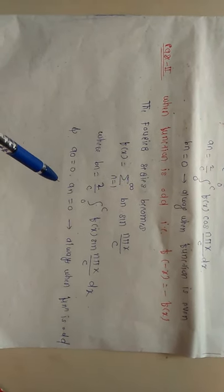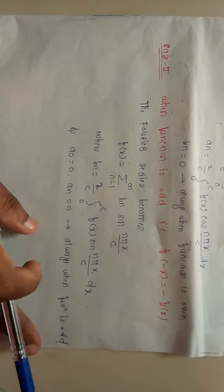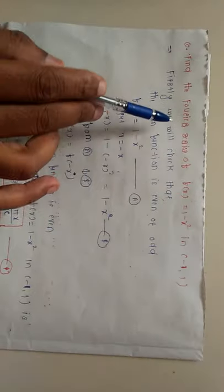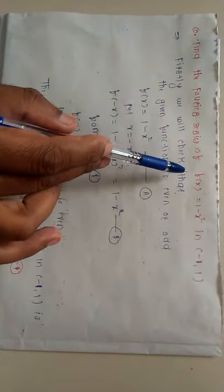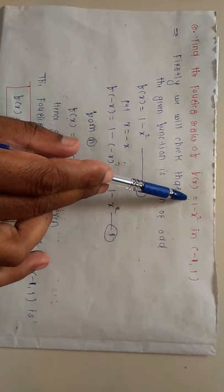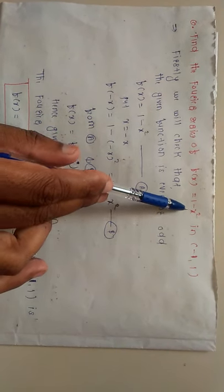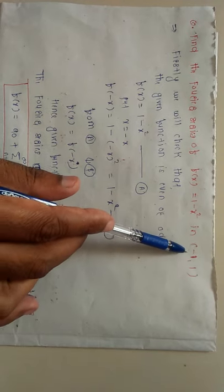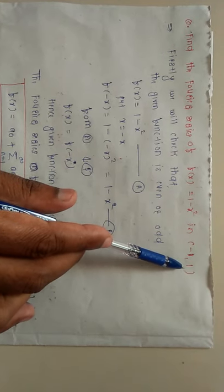We will now see a particular example on the interval from -c to +c. Find the Fourier series of the function f(x) = 1 - x² in the interval from -1 to +1.